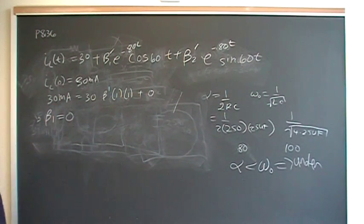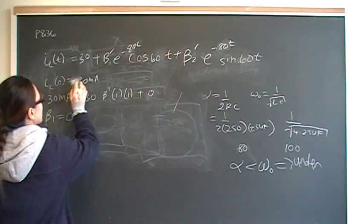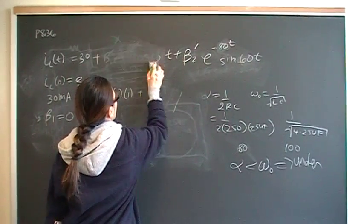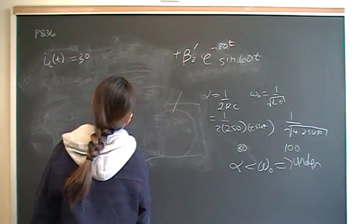Now we know that whatever our current equation is, we know that beta 1 is zero. So this term goes away. Now we're just left with beta 2 to solve for.